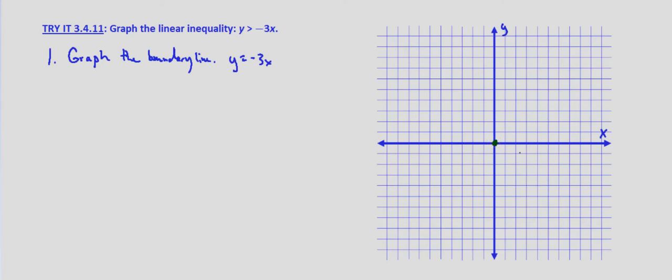And we can just use the slope if we want to. It's negative 3. So that's negative 3 over 1, so for every 3 we go down, we go 1 to the right. So 1, 2, 3.